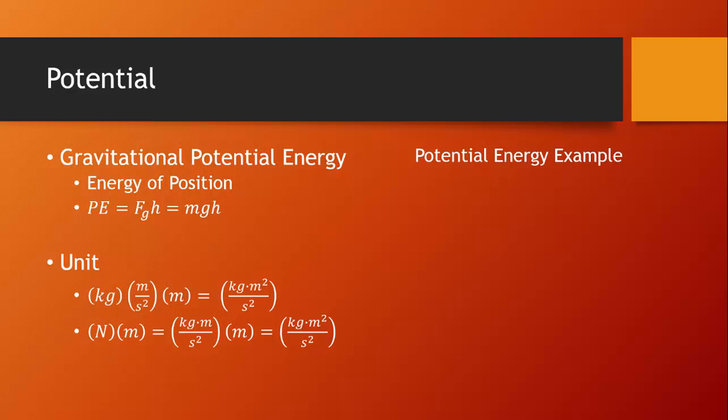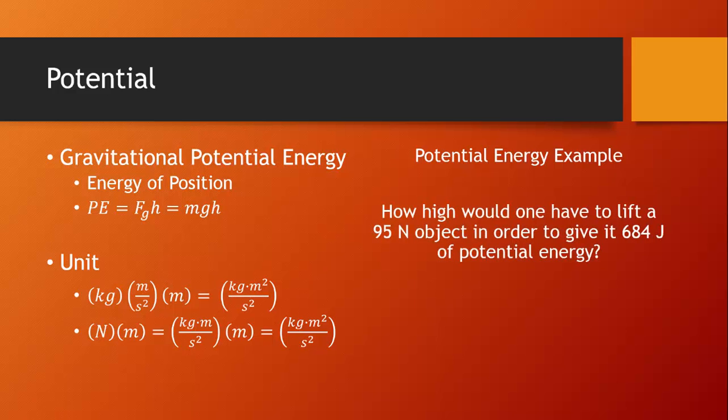Let's take a look at an example of a potential energy problem. How high would one have to lift a 95 newton object in order to give it 684 joules of potential energy? We'll start with the equation PE equals fgh. I've selected this form of the potential energy equation because I know the weight of the object, 95 newtons. I don't know the mass of the object. When I substitute in the energy and the weight, I can find that the height is 7.2 meters.